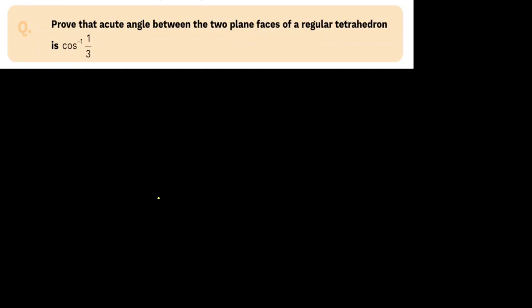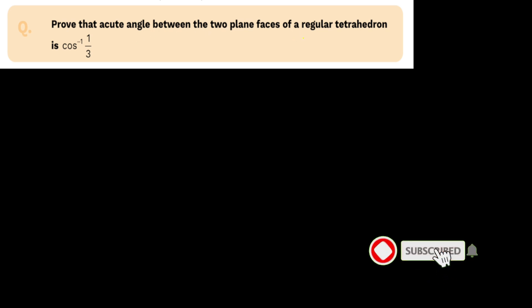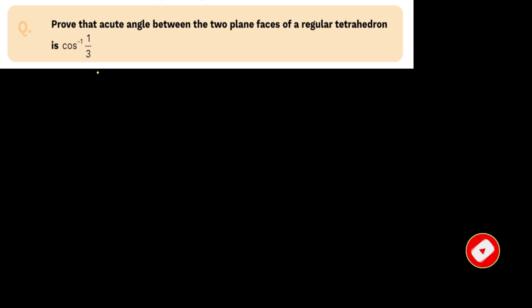Hello everyone. Today's question is really special and it is from Vector in Vector 3D. The question is: prove that the acute angle between the two plane faces of a regular tetrahedron is cos inverse 1 by 3. They can ask you in the exam to calculate the angle between the two plane faces of a regular tetrahedron.